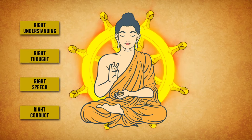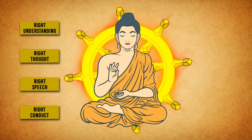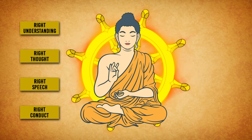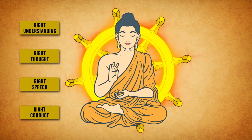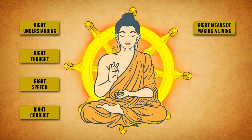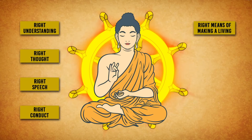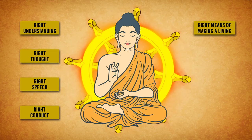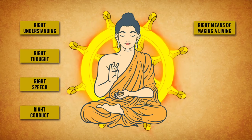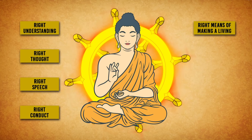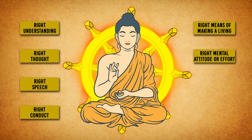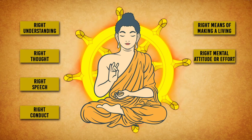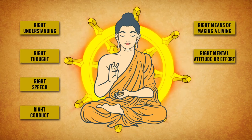4. Right Conduct — Adhering to the idea of non-violence as well as refraining from any form of stealing or sexual impropriety. 5. Right Means of Making a Living — Not slaughtering animals or working at jobs that force you to violate others. 6. Right Mental Attitude or Effort — Avoiding negative thoughts and emotions such as anger and jealousy.